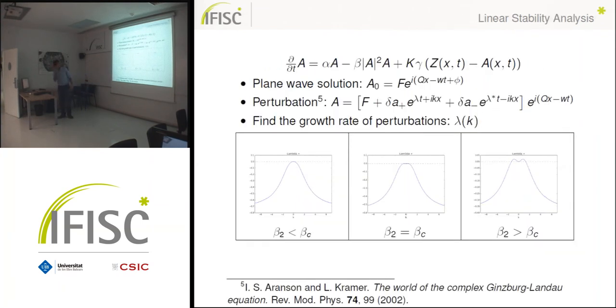And to study that we made the linear stability analysis of the plane wave solutions. We introduced this kind of perturbation to the plane wave solution, as they used here for the Ginzburg-Landau equation. And we found this expression for the growth rate where we found that for beta 2, which is the imaginary part of beta, there is a critical value for which the plane waves become unstable.